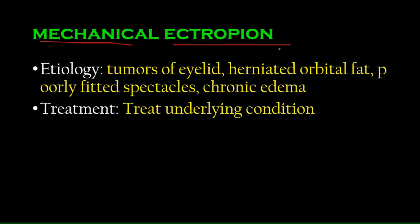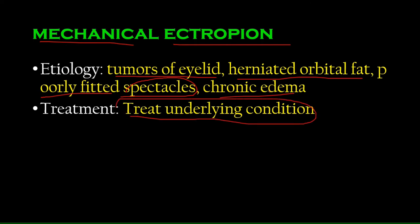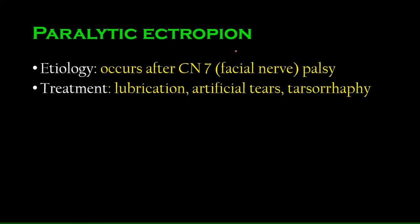Mechanical ectropion is a bit interesting. Certain conditions may cause the eyelid to flip outwards — for example, tumors of the eyelid, herniated orbital fat, poorly fitted glasses or spectacles, and chronic edema. Here you don't do surgery on the eyelid directly; you treat the underlying condition. If there's chronic edema you manage that; if there's a tumor you address the tumor, and the mechanical ectropion will resolve.